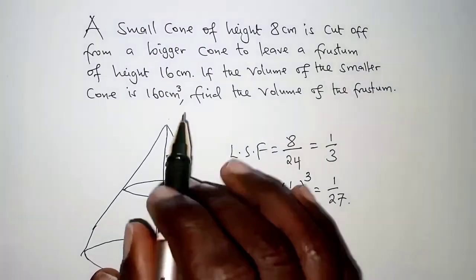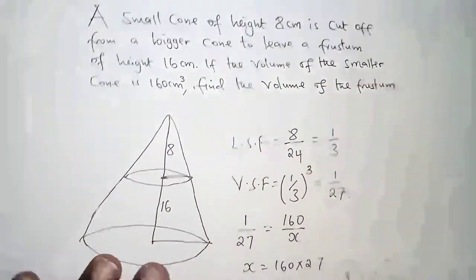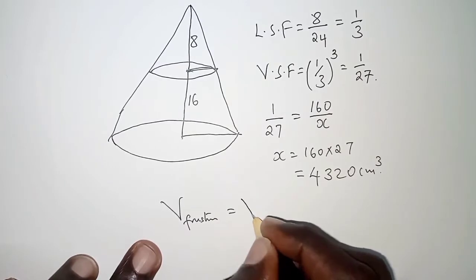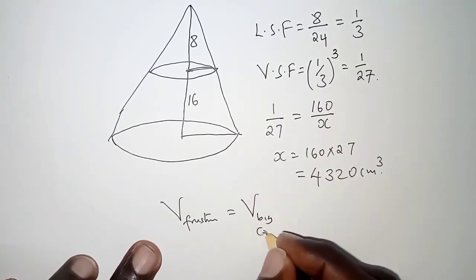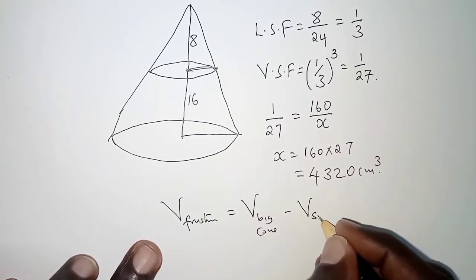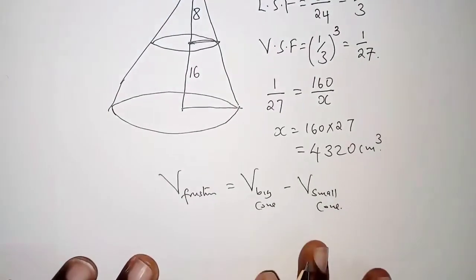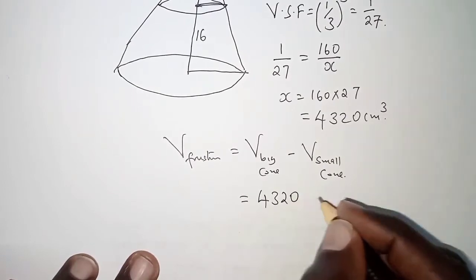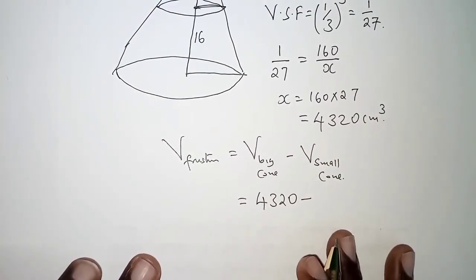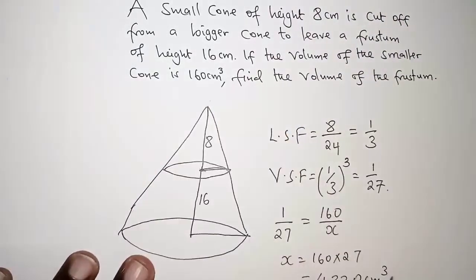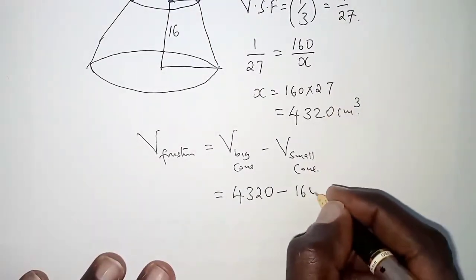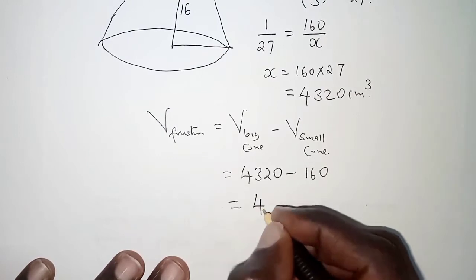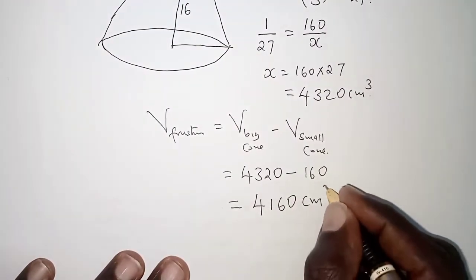We are required to get the volume of the frustum, which is simply the volume of the bigger cone minus the volume of the smaller cone. The volume of the bigger cone is 4320, and we subtract the volume of the small cone which is 160. Therefore, the volume of the frustum is 4160 cubic centimeters.